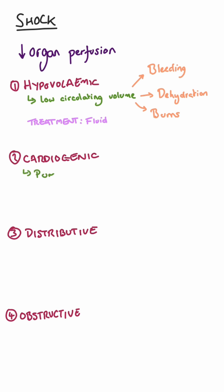Cardiogenic shock is a pump failure and this can occur from having a heart attack or any arrhythmias. This type of shock often needs inotropes and specialist intensive care.